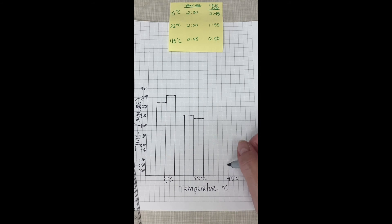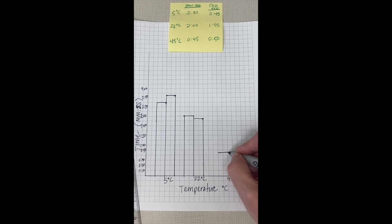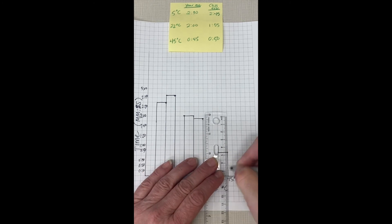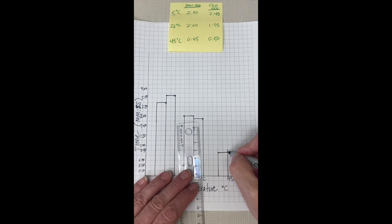And then for the 45 degree one, it was at 45 seconds. So this is 30, this is 40. So this would be 45 seconds. And for the class average, it was 50 seconds.